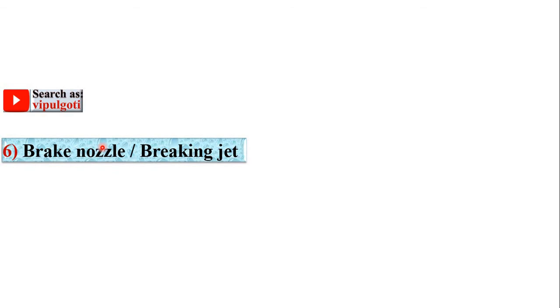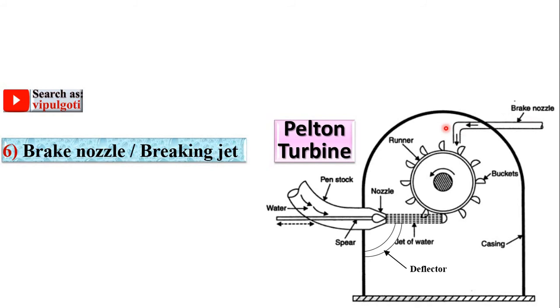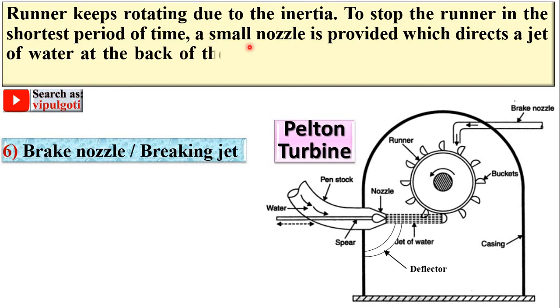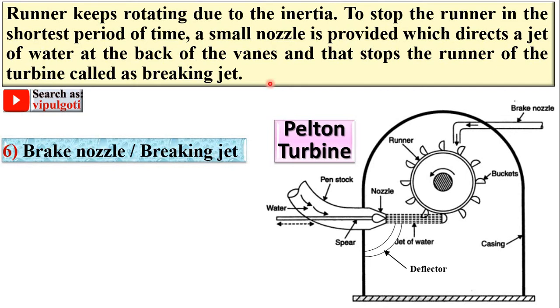Next: the braking nozzle, sometimes called the braking jet. The runner keeps rotating due to inertia. To stop the runner in the shortest period of time, a small nozzle is provided which directs a jet of water at the back of the vanes, stopping the runner.